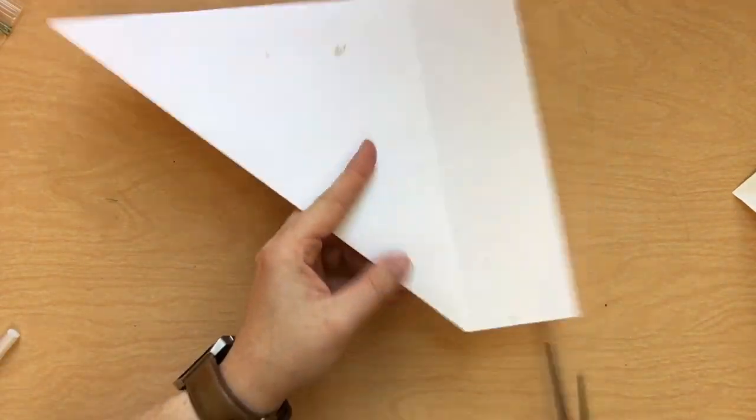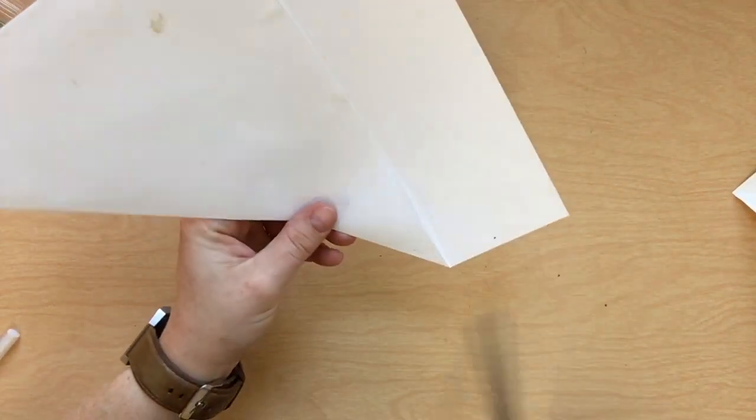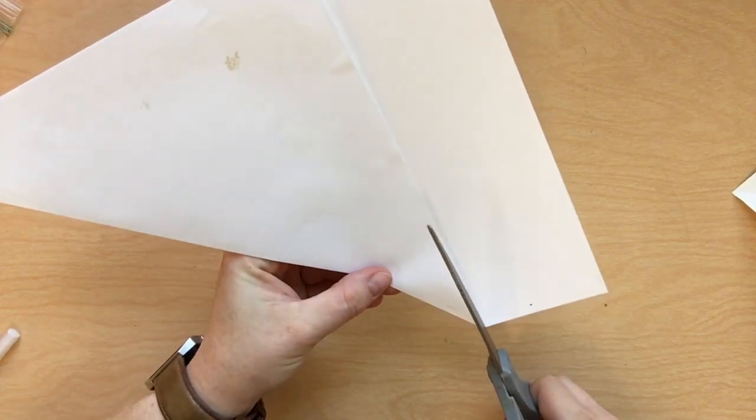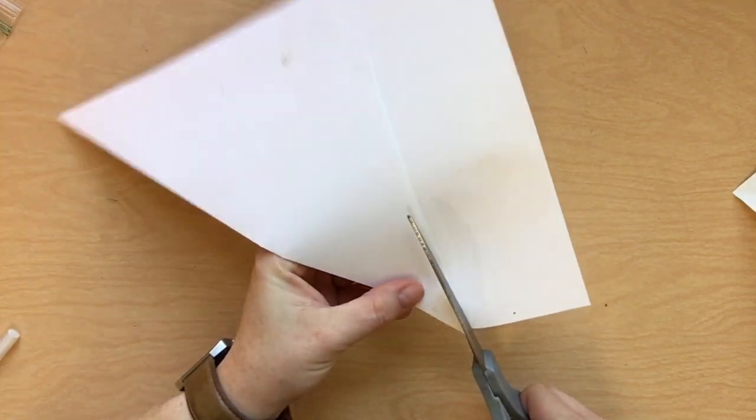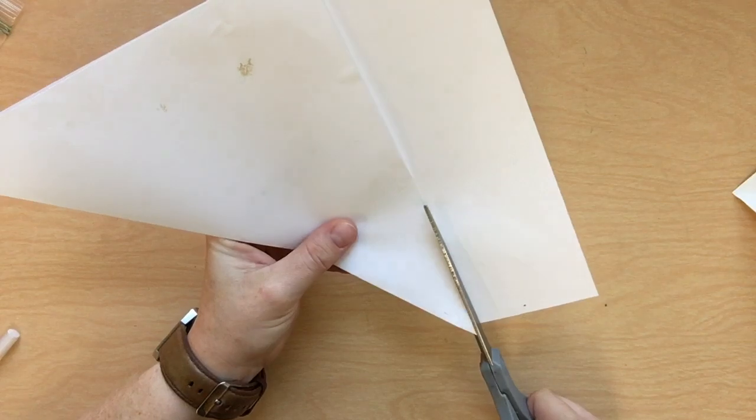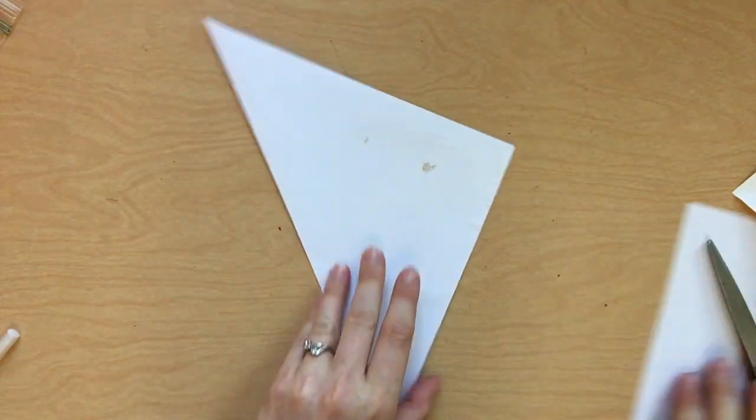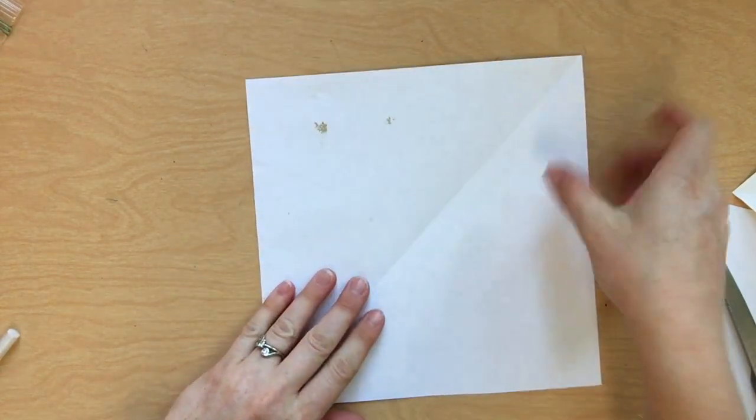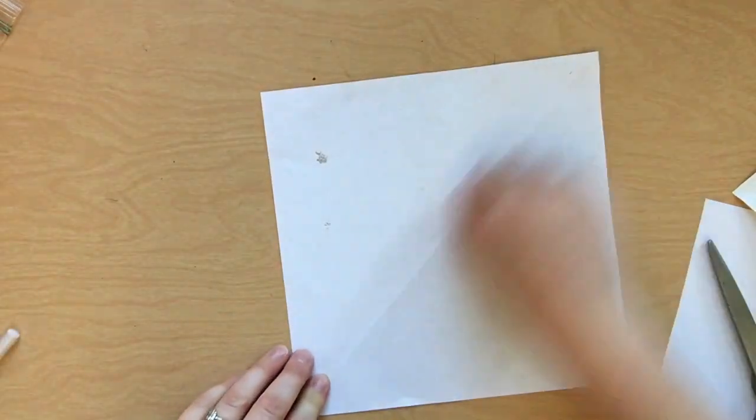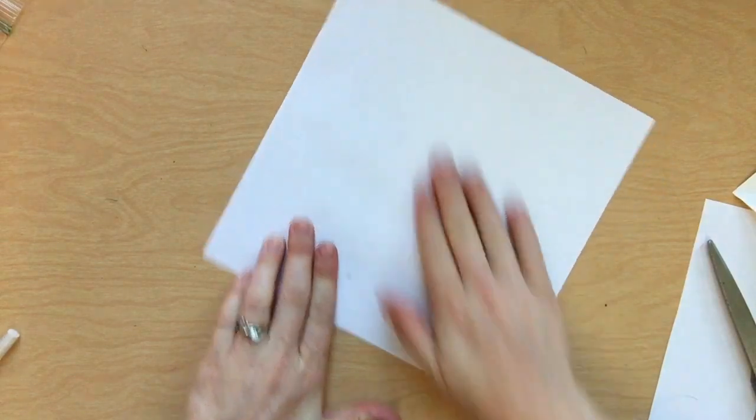You will have a half triangle or perfect square when you open it up. Cut off that extra edge. You may have done this if you've done origami before. Open it up. Only downside is you have a crease, so just take your finger and get that out the best that you can.